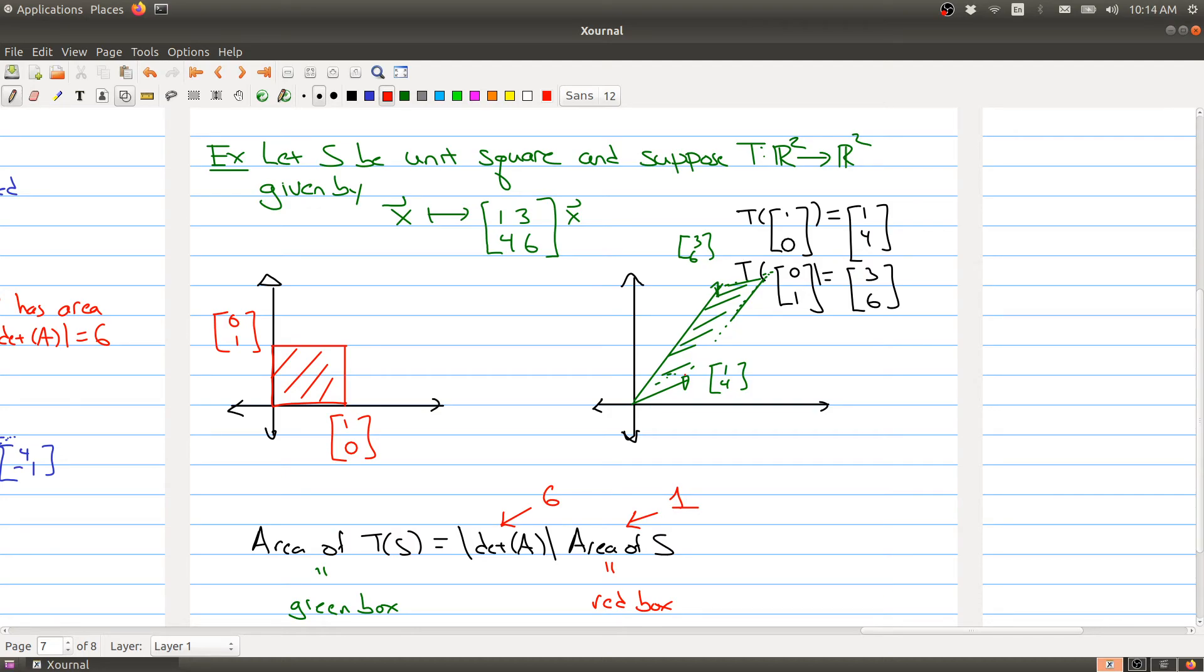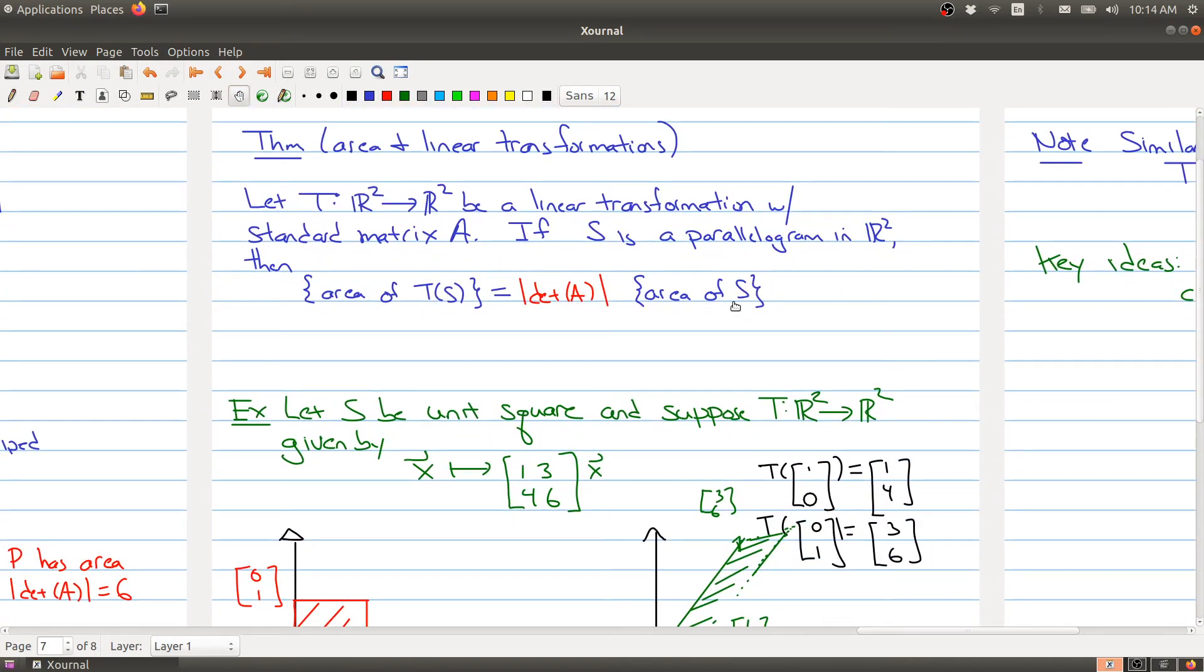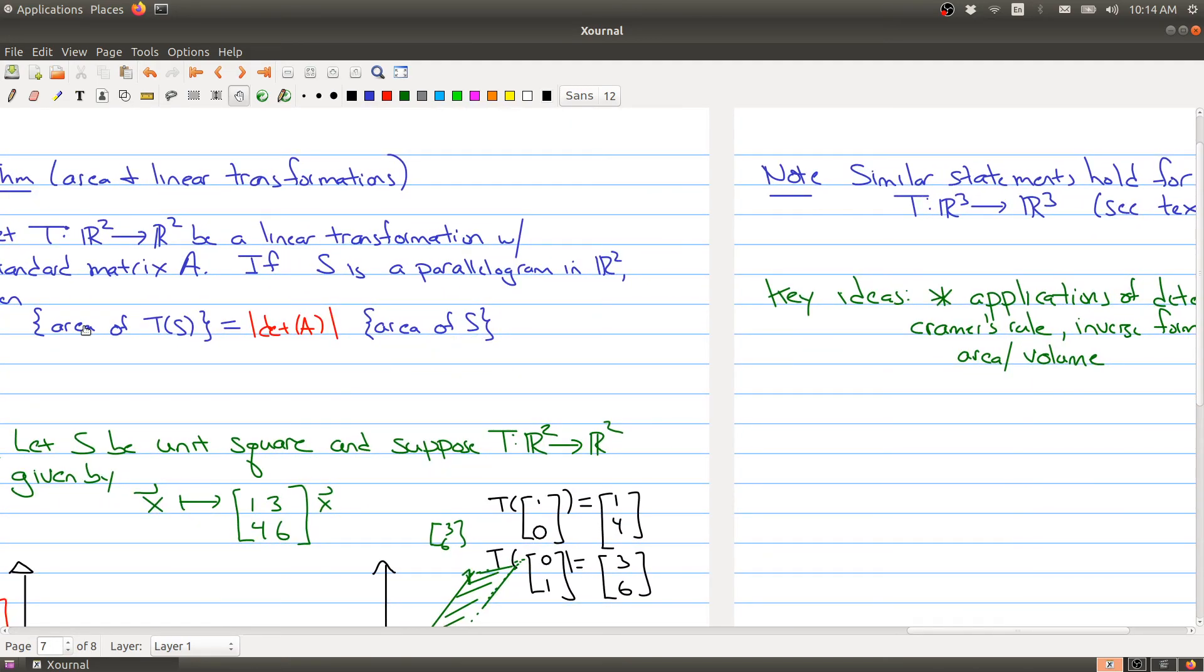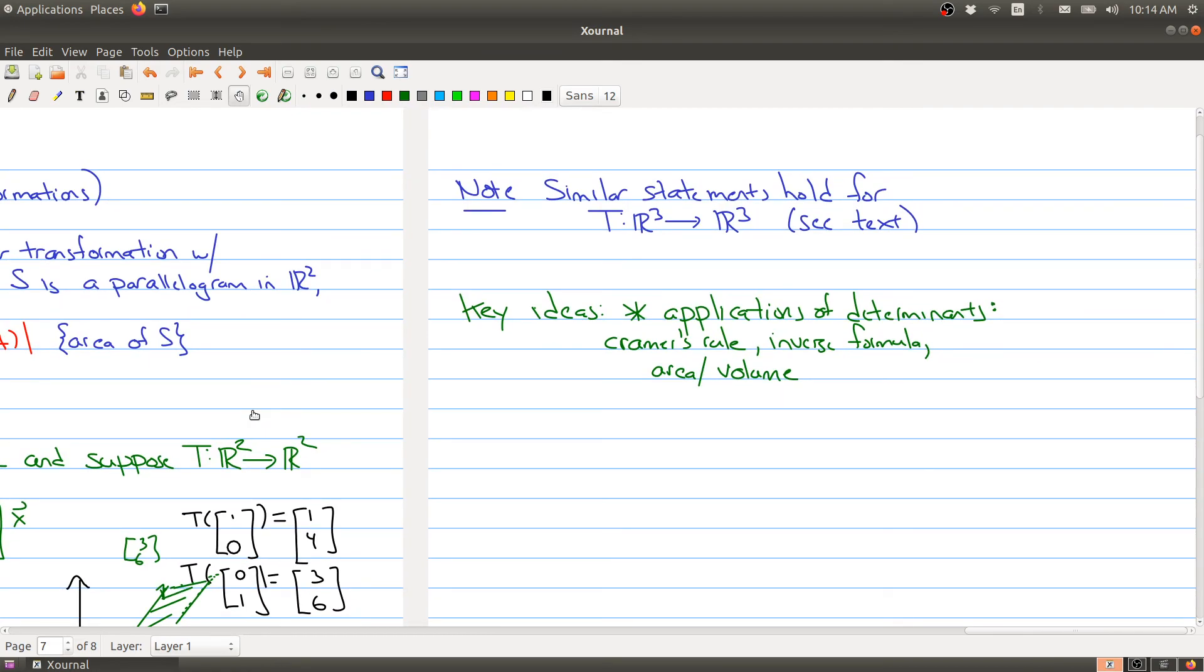So we have this nice connection between using the standard matrix that allows you to relate areas where you started with, with areas of the objects that you end up with. And even though I've only stated this for R2, there's actually similar statements hold for R3. You would be talking about volume of an object and the volume of the object, and then you're relating the determinant is kind of telling you the scaling factor. And of course, if you can imagine n-dimensional space, similar types of statements hold.